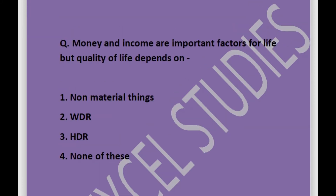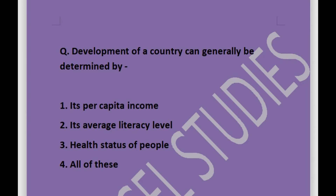Next question: money and income are important factors for life, but quality of life depends on — options are non-material things, WDR, HDR, or none of these. Answer is non-material things. Next question: development of a country can generally be determined by its per capita income, its average literacy level, health status of people, or all of these. Answer is all of these.